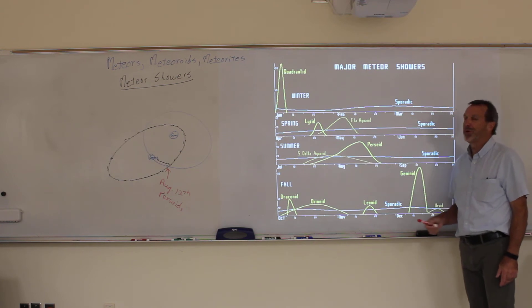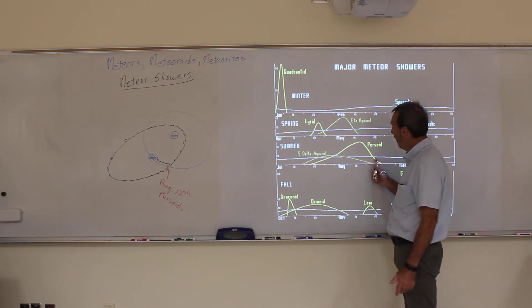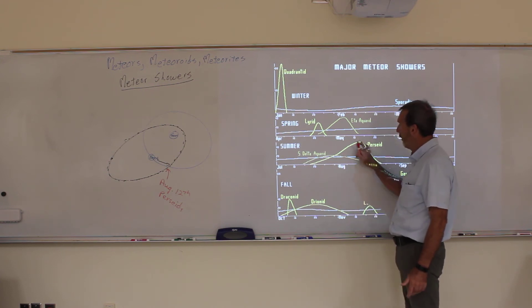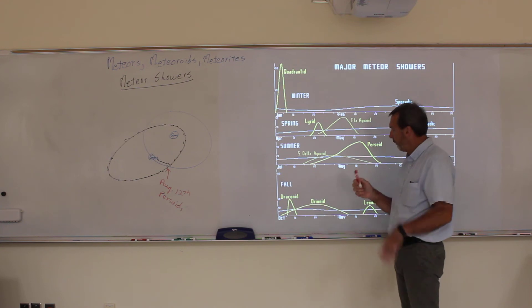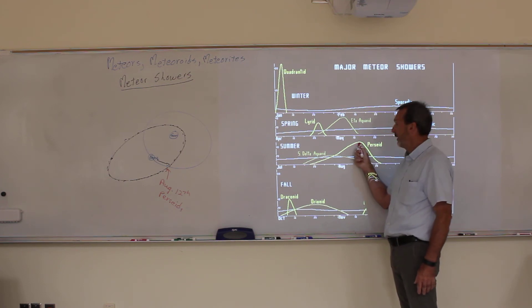The other one that's really good is the Geminid right here. It peaks around December 13th, 14th right in here. Right after you're done with finals. And it also gets up to about 100 per hour. However, most people in the winter say, oh, it's too cold. They don't go sit outside at night and look for meteors. But in the summer you don't mind doing that. It's like, oh, let's just hang out all night and watch the meteor shower. That's why the most famous one in the summer is this Perseid one. You see it actually extends for quite a while, meaning the stream is kind of wide.